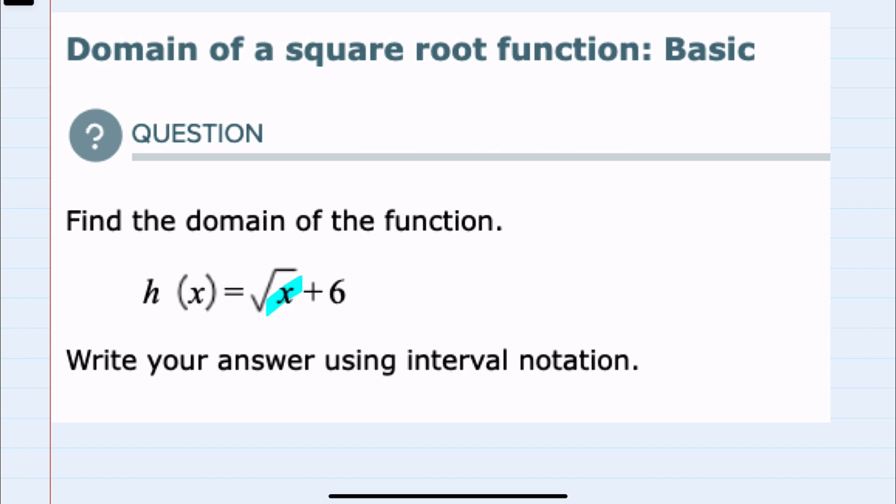And for real numbers, the value underneath the square root, here the x, has to be either zero, because we can take the square root of zero, or larger. We can take the square root of positive numbers, but x could not be a negative number.